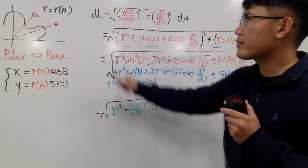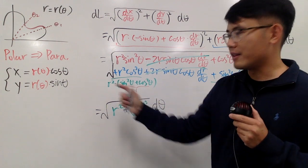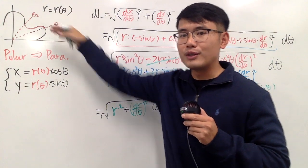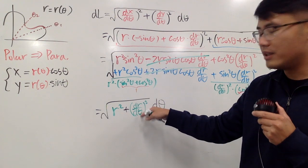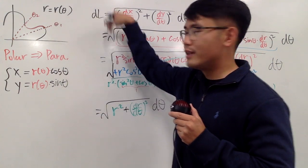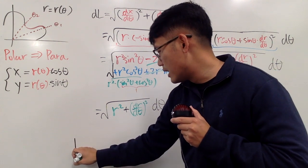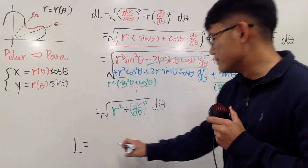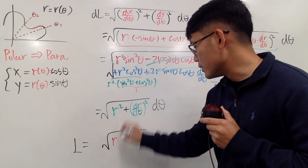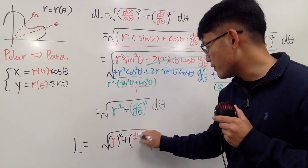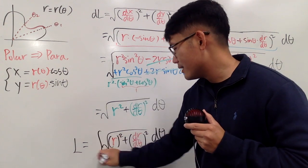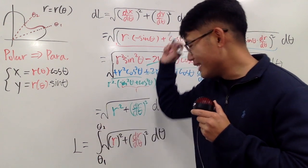So here is dL: in the R-and-theta world, dL = √(R² + (dR/dθ)²) dθ. To find the total arc length, we integrate both sides. L equals the integral of √(R² + (dR/dθ)²) dθ, where you substitute in the given function for R and differentiate with respect to theta. We integrate from theta 1 to theta 2, and we are done.